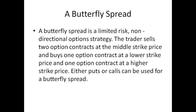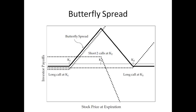A butterfly spread is a limited risk, non-directional option strategy. The trader sells two option contracts at the middle strike K2, buys one at a lower strike K1, and buys one at a higher strike K3. The maximum payout is if at expiration the stock price is at K2. This is essentially a bet that the underlying will not move very much.